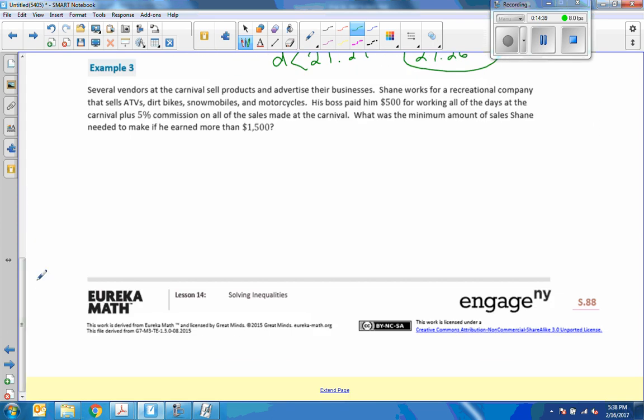Example 3. Several vendors at the carnival sell products and advertise their business. Shane works at a recreational company that sells ATVs, dirt bikes, snowmobiles, and motorcycles. His boss paid $500 for working all of the days. So that's the constant, $500 is constant. Not a variable, not multiplying by a variable. The carnival plus, it says for working all of the days at the carnival plus 5% commission. All of the sales made in the carnival, what was the minimum amount of sales Shane needs to make if he earns more than, more than $1,500.